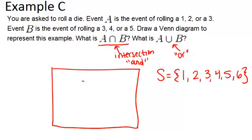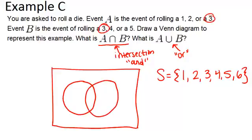Now event A is when you get 1, 2, or 3. And event B is 3, 4, or 5. So notice where they overlap is at the 3. So in the middle we'll have 3. And then for event A, besides the 3, we also have 1 and 2. And for event B, besides the 3, we have 4 and 5.